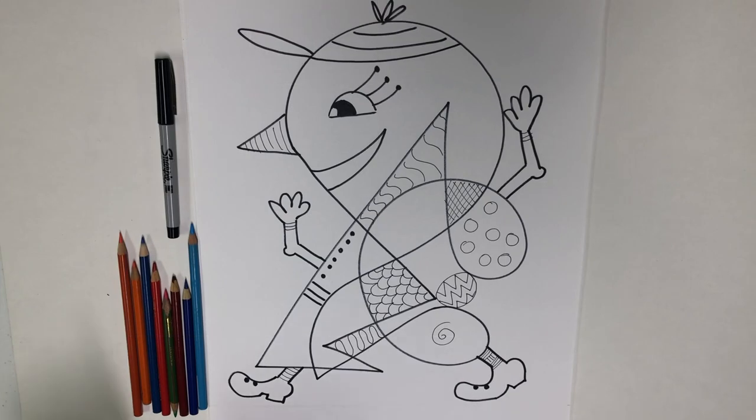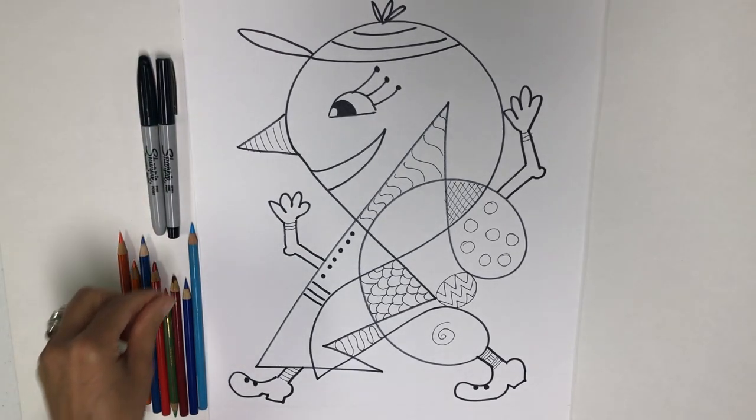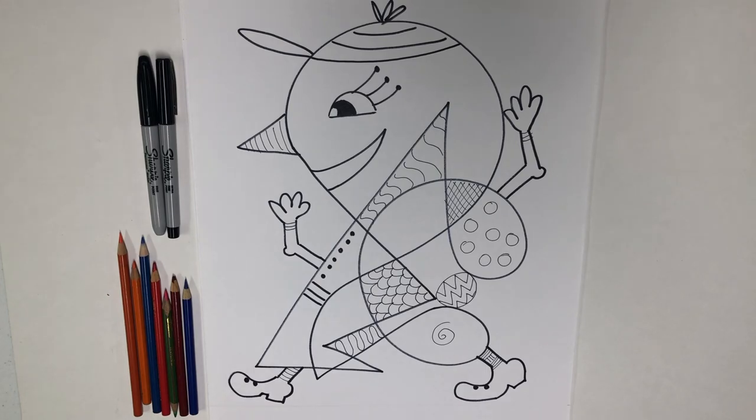And now we can add the color. So let's get to it. I want to show you how you actually can create dimension with the color by shading.